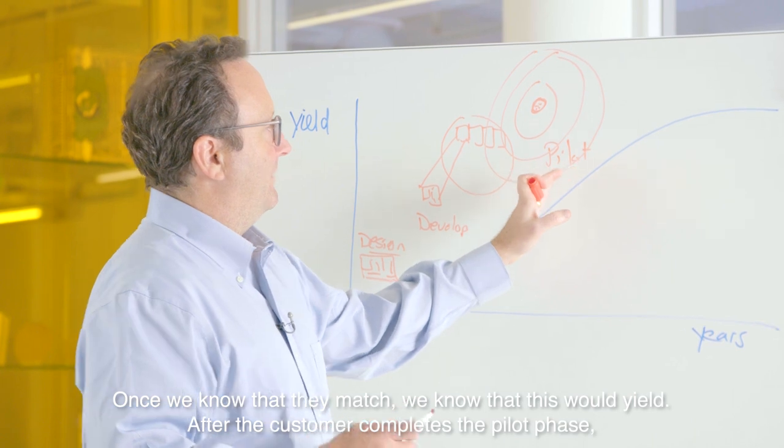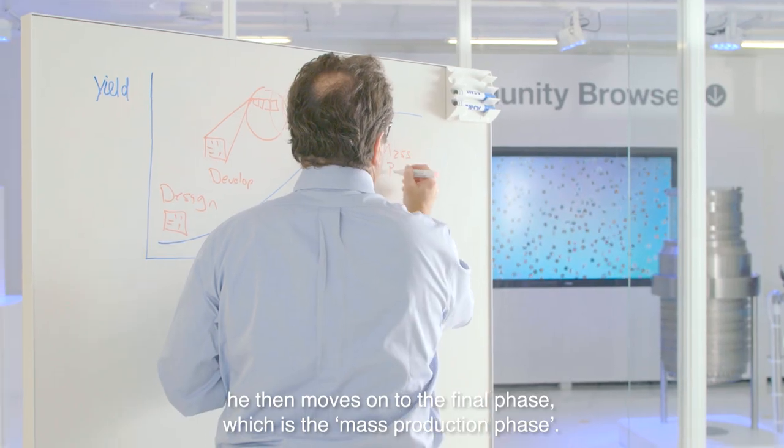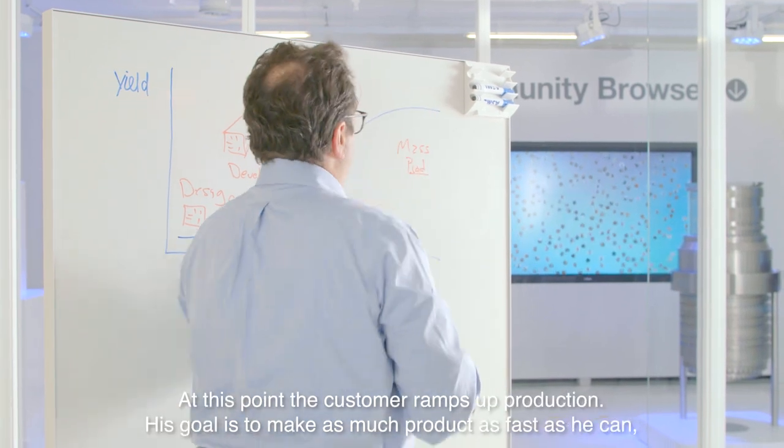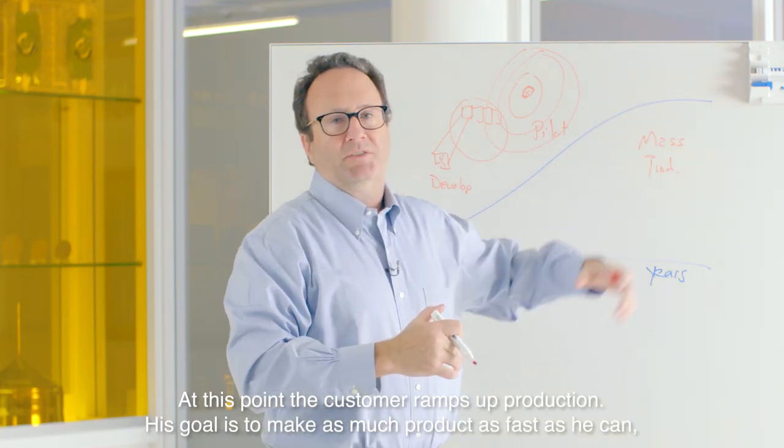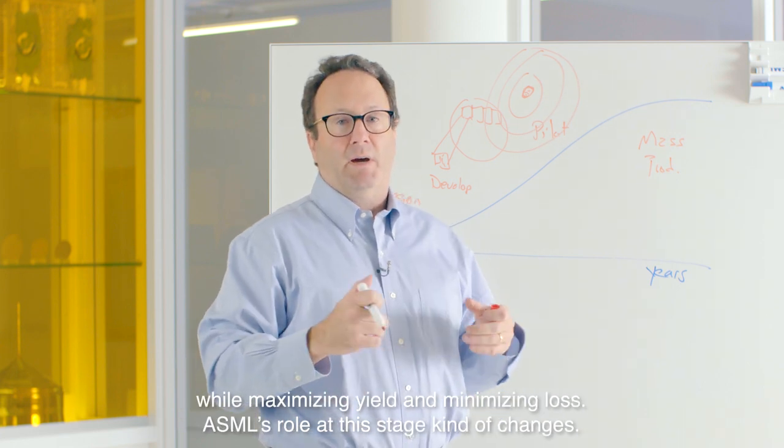After the customer completes the pilot phase, they then move on to the final phase, which is the mass production phase. At this point, the customer ramps up production. Their goal is to make as much product as fast as they can while maximizing yield and minimizing loss.